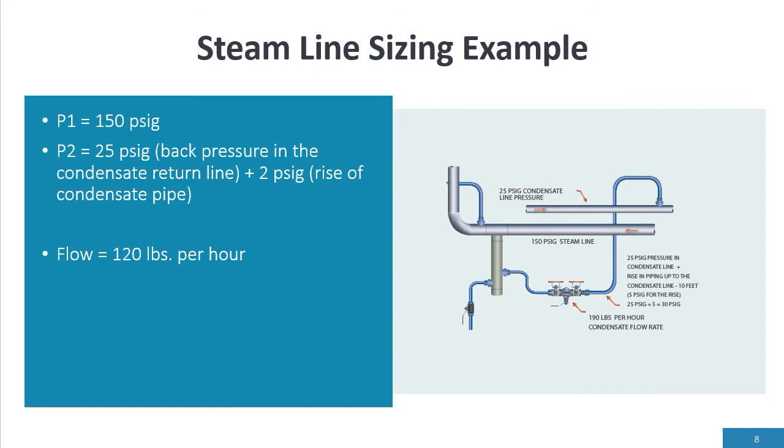Another example here is a drip leg steam trap, which is a common steam trap out there in operation. P1 is 150 psi, we have 25 psi back pressure, 2 psi for the rise in the condensate pipe because it's 10 feet rise. So we really have 30 psi differential. My flow is 120 pounds per hour.